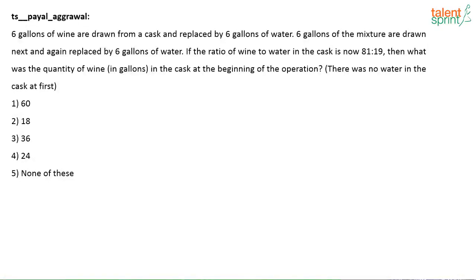The first question was posted by Payal. Try out this question — it's on allegations and mixtures, basically involving removal and replacement. What is given? 6 gallons of wine are drawn from a cask and replaced by 6 gallons of water. 6 gallons of the mixture are drawn next and again replaced by 6 gallons of water. If the ratio of wine to water in the cask is now 81:19, then what was the quantity of wine in the cask at the beginning? It is said there was no water in the cask initially. What will be the answer? How will you go about solving this question?